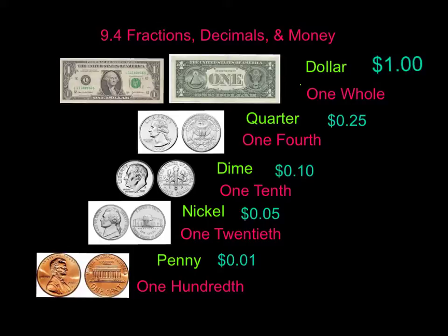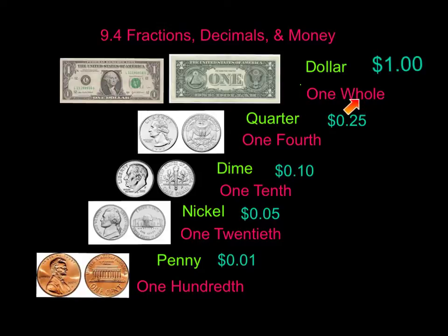The first thing we're going to do is review our American money system. We have our one dollar bills. Notice we have a dollar — this is how we would write it in terms of money, and this is how it would be written as words. This is one whole. When we're talking fraction-wise, it would be one whole, for one whole dollar. Here's the back of a dollar and the front of a dollar.